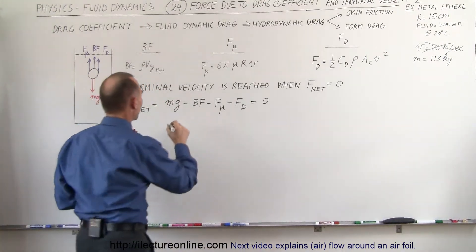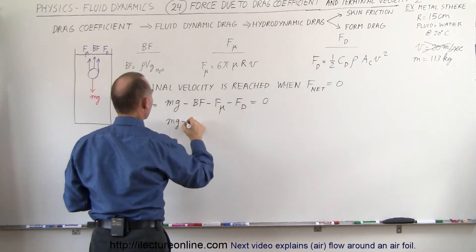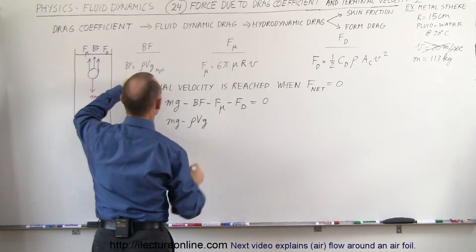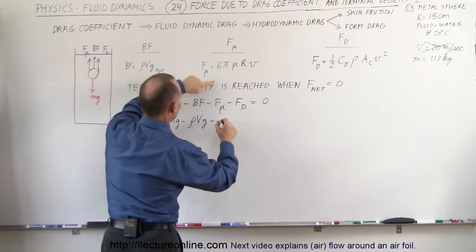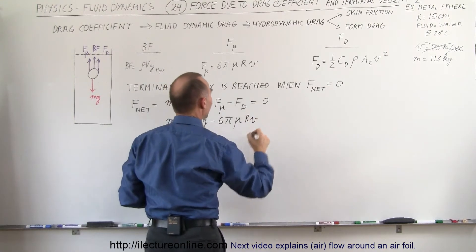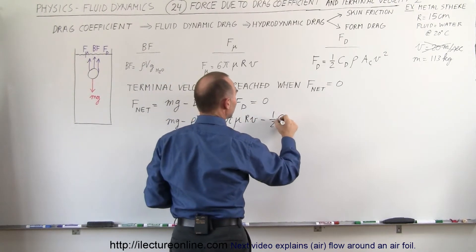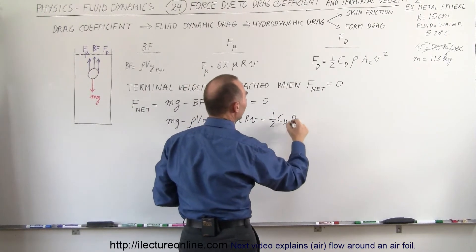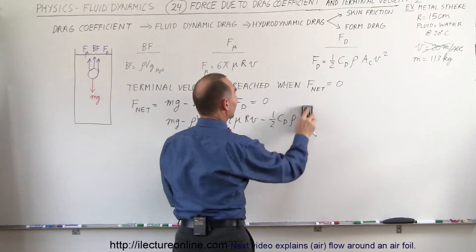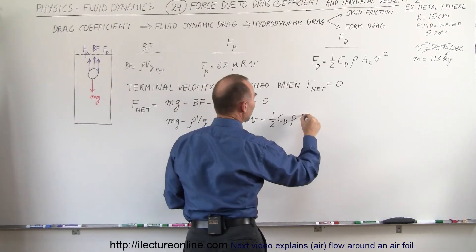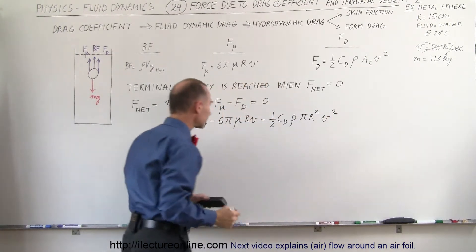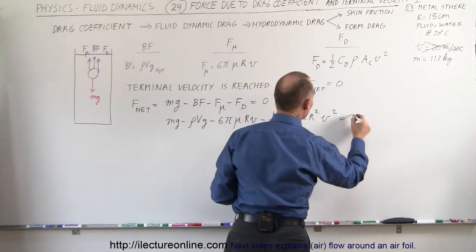The net force equation is: mg minus the buoyancy force — which equals the density of the liquid times the volume of the object times g — minus 6π times the coefficient of viscosity times the radius times velocity, minus one-half times the drag coefficient times the density of the liquid times the cross-sectional area (π times radius squared) times velocity squared, all set equal to zero.